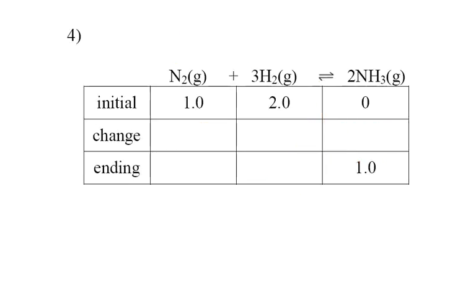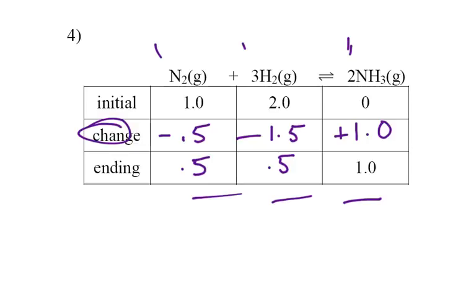For number 4, I start with 0 ammonia but end up with 1, so I must have made 1.0. If I know anything in my change row, I can fill it all in. 2 is to 3 as 1 is to 1.5. If I'm making this stuff, I must be using up the hydrogen. 2 is to 1 as 1 is to 0.5, so I'm using that up. Summing it up, 1 minus 0.5 gives 0.5. 2 minus 1.5 also gives 0.5, and 1.0.